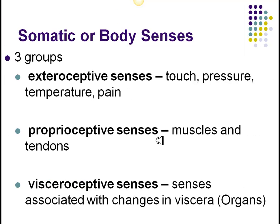The somatic or body senses we break down into three groups: extero, proprio, and viscero. Exteroceptive receptors are located externally — touch, pressure, pain, temperature — things you'd find in your skin. Proprioceptors are deep in muscles and tendons and give you feedback about how much pressure you're putting on your muscles or tendons during stretching or physical activity. Visceroceptive receptors come from your organs, letting you know things like my bladder is full, my stomach is empty, or I'm having an appendicitis.